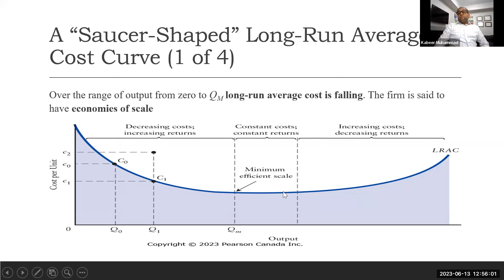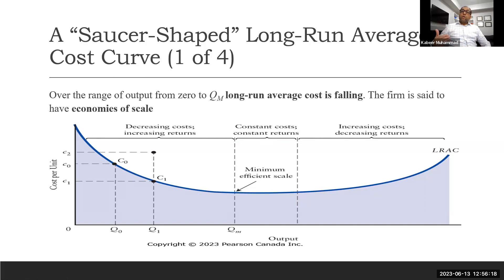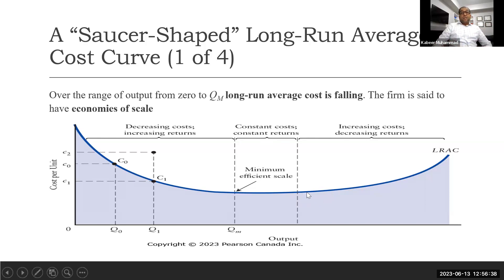The second portion is the flat portion, called constant cost, because cost does not change as we produce further units. We also call this constant returns to scale: whatever unit we add as input, the resulting output is proportionally equal. The third portion is where producing more units causes the long run average cost to start increasing, which we call increasing cost.